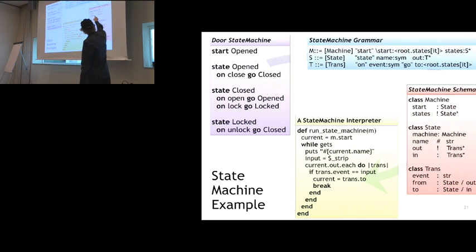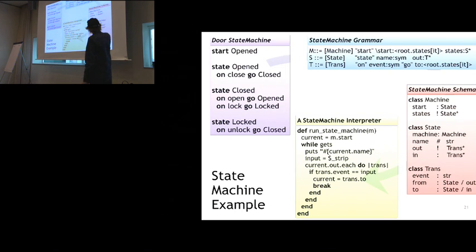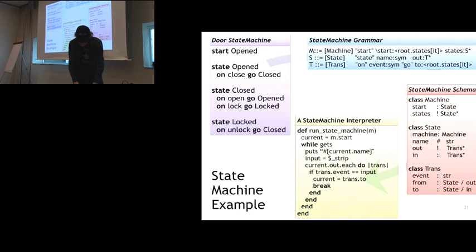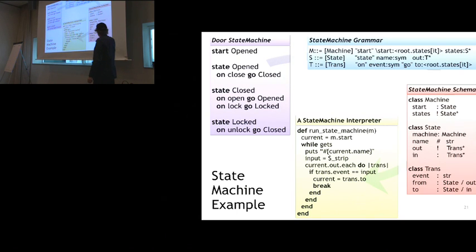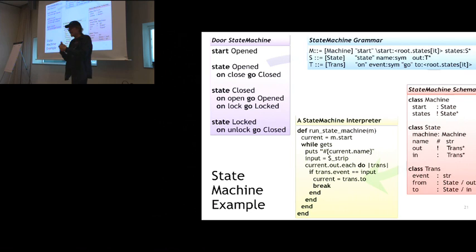Here's the actual data model being written into. It's got a class machine with a start state and states. Class state has a machine, which is the inverse of the states field — they're inverses of each other in relational modeling. It's got a name, a set of out transitions, and a set of in transitions. A transition is an event that has a string, and it has a from and a state, called from and to, with inverses for out and in. Those are all connected up in a graph.